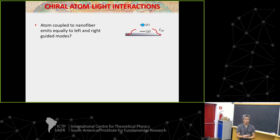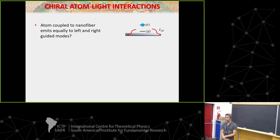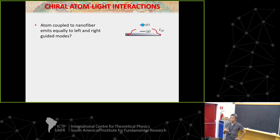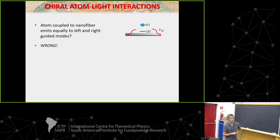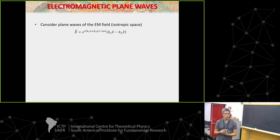In all the pictures so far, the system looks mirror symmetric. So if I have an excited atom, I'd expect half the time it emits a photon propagating to the right, half the time to the left. But it turns out that even though the system looks perfectly mirror symmetric, it doesn't have to be true. Let me now try to argue why that's the case and what's missing from this cartoon picture.